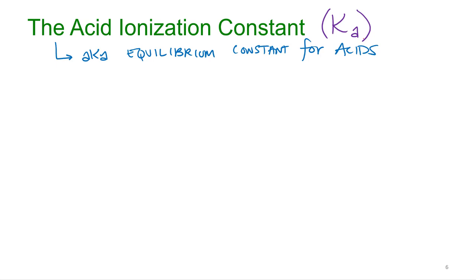Generally what we do is we'll draw the equilibrium expression for a generic weak acid, and when we talk about generic weak acids, we usually just say H-A. That's my weak acid, H-A.